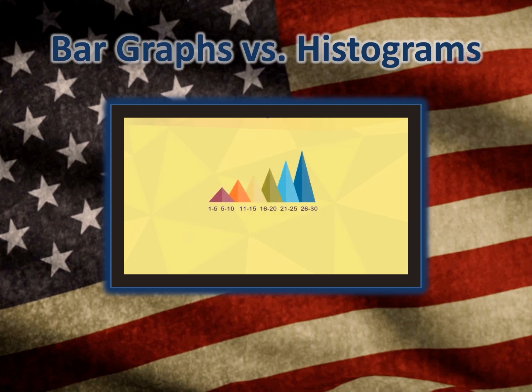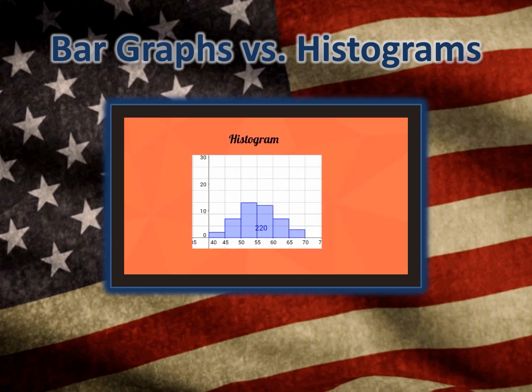With a histogram, the categories are numerical. For example, notice in this histogram the x-axis is the age of the people in the room. The ages are grouped in a numerical range.